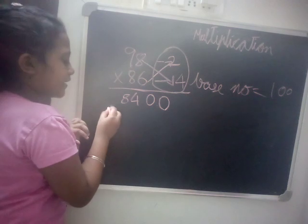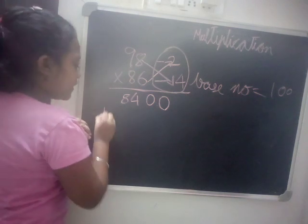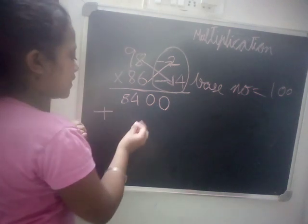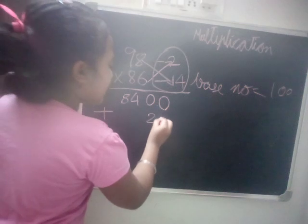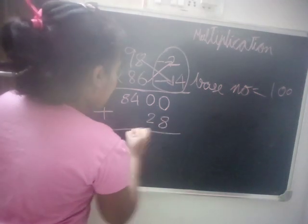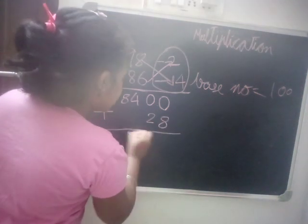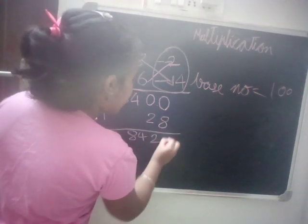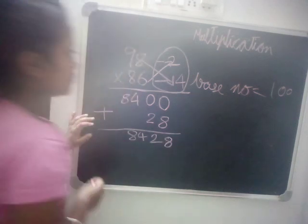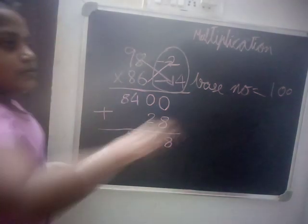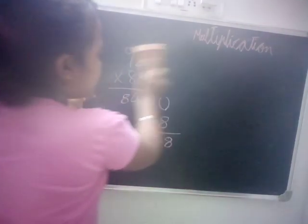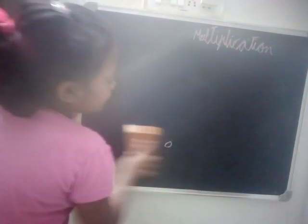Now multiply the two remainders: 2 into 14 is 28. So 8400 plus 28 equals 8428. With the base method we can easily handle double digit and triple digit numbers. Now moving on to the rule of addition.